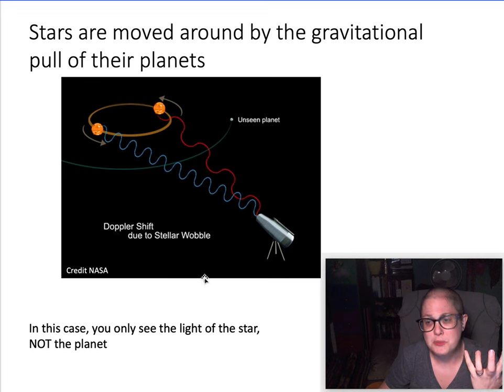What that does is when you get the light from the star, sometimes the light is red shifted because the star is moving away from you in its orbit, sometimes it's blue shifted. And so what we actually measure is the motion of the star which can then be inferred to be from a planet.